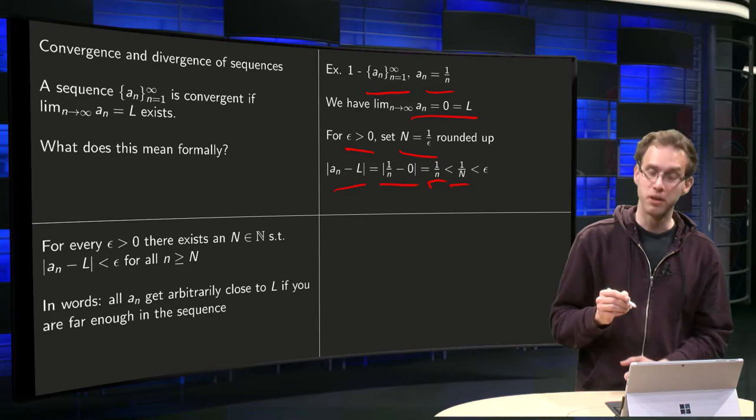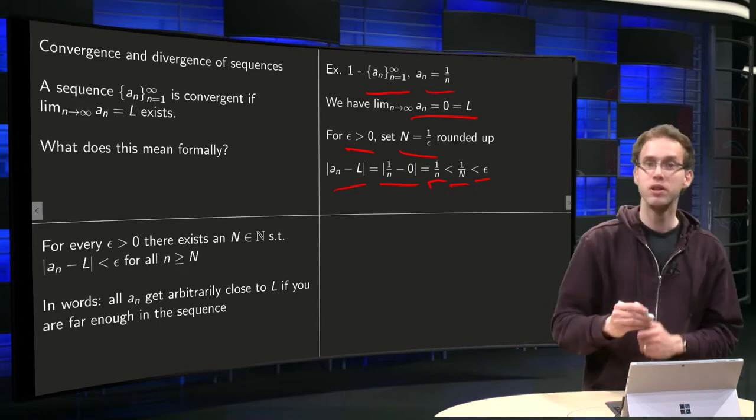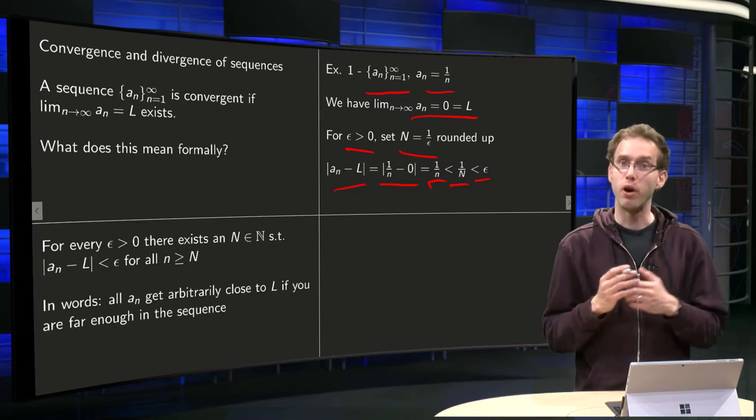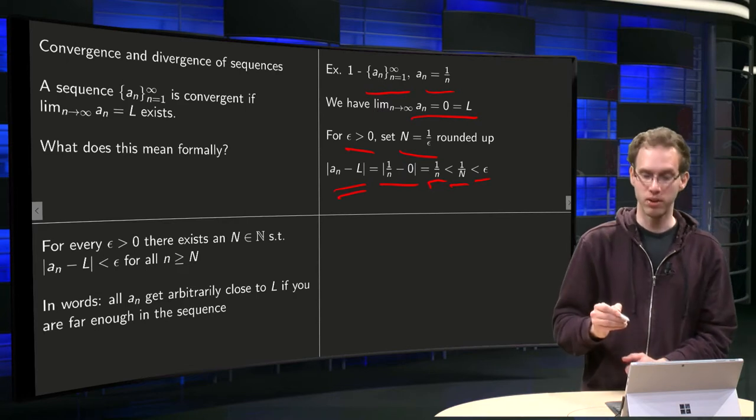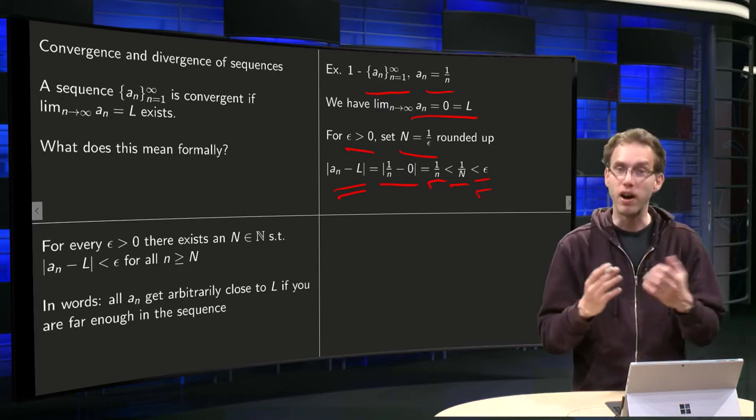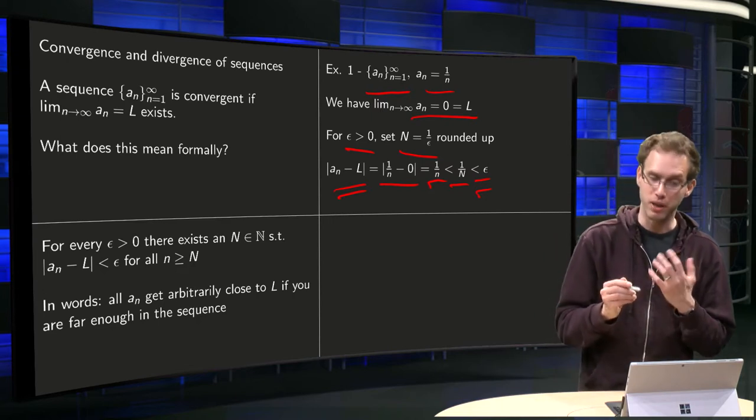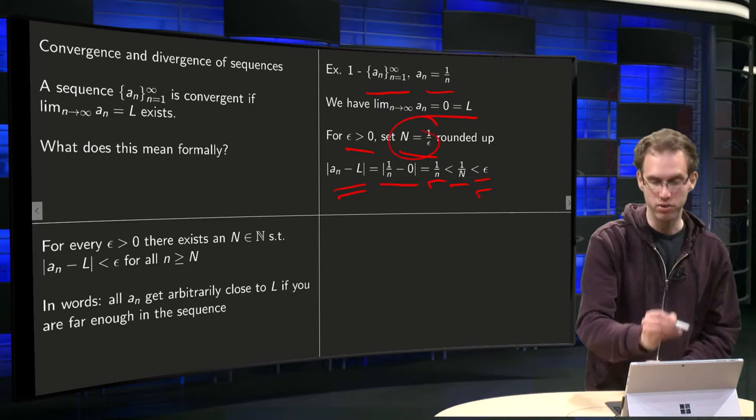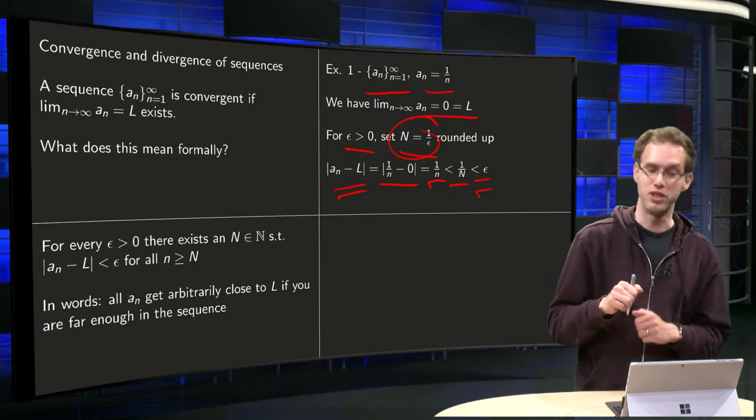So 1 over small n is smaller than 1 over capital N, and we have chosen capital N to be equal to 1 over epsilon. So 1 over n is then smaller than epsilon. So we see a_n minus L gets smaller than any epsilon bigger than 0, provided you pick your capital N big enough—you have to pick your capital N such that capital N equals 1 over epsilon. So this is how you show formally that this limit equals 0.